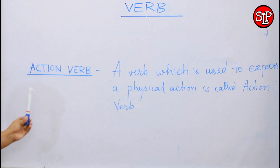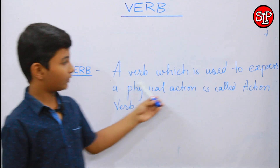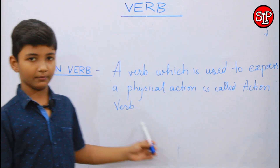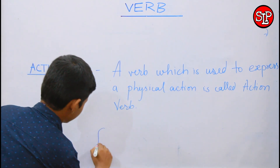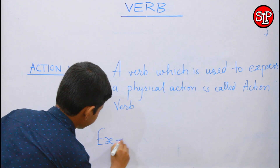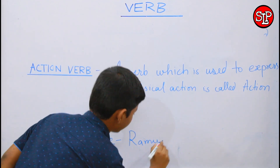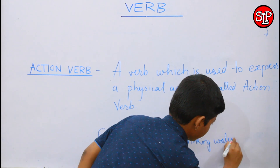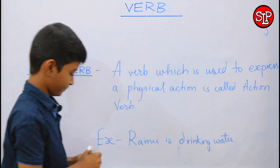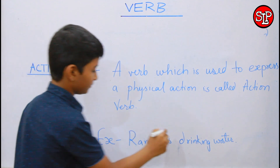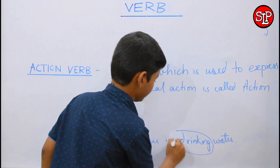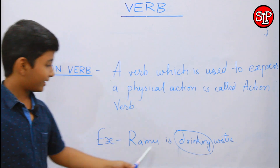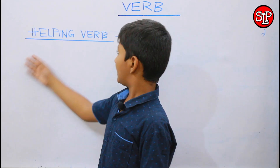So, the definition of action verb is: a verb which is used to express a physical action is called an action verb. The example of action verb is: Ramu is drinking water. In this sentence, drinking is the action verb because it says that Ramu is drinking water.